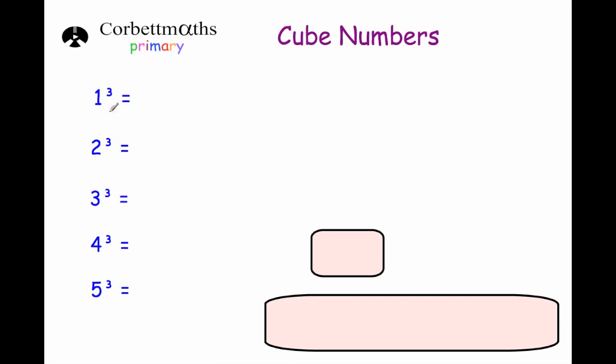So this means 1 cubed. This little 3 above the 1 is the cube symbol. This is 2 cubed, 3 cubed, 4 cubed, 5 cubed.